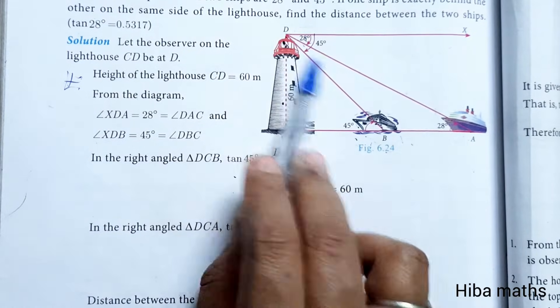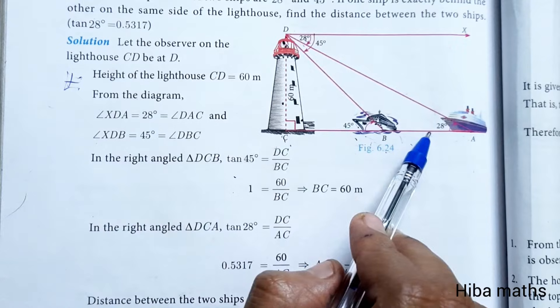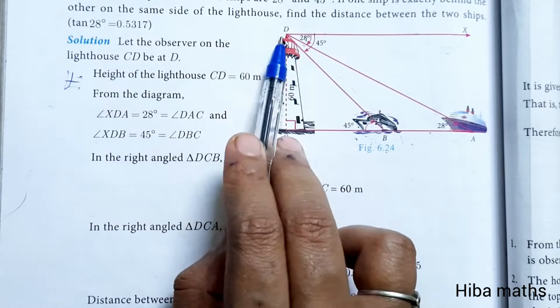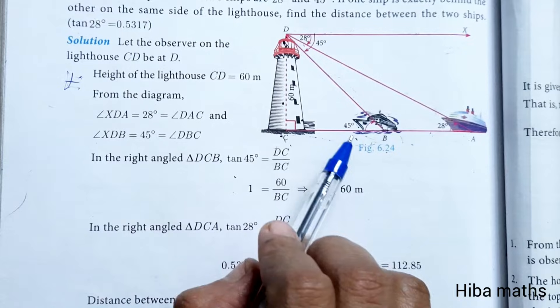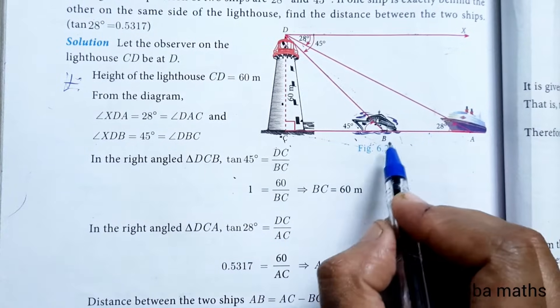This is 28. This is angle DAC is 28. This is angle XDB, 45. This is angle DBC is 45 degrees.